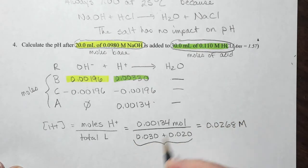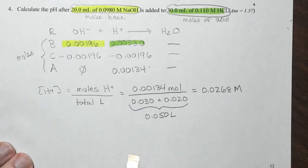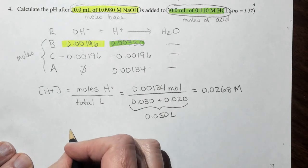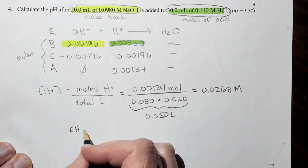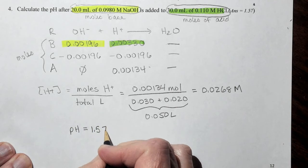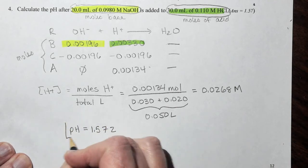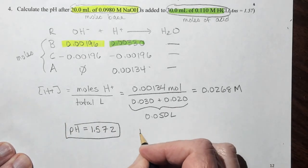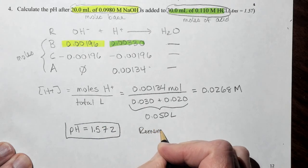Okay, so this would be 0.050 liters. So we take the negative log of that and our pH is going to be equal to 1.572. Now key here is remember to use the total volume.